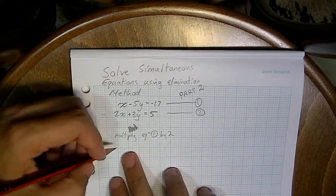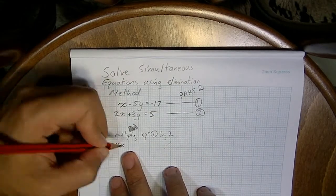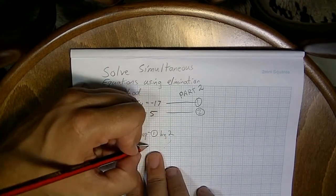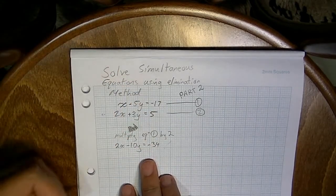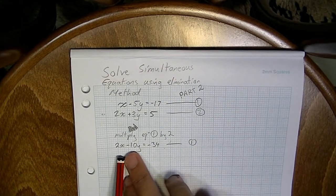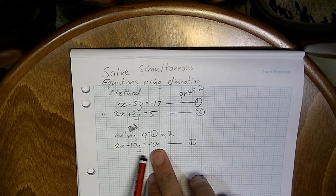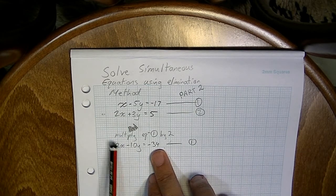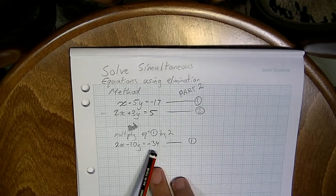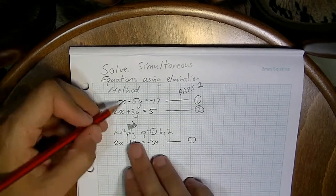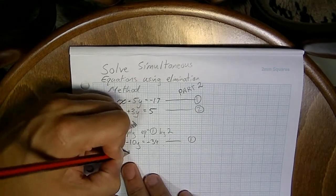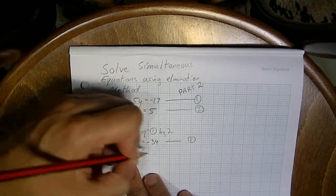When I multiply equation 1 by 2, I get 2x minus 10y equals negative 34. That's still equation 1. Remember, I've multiplied everything by 2, so it hasn't changed anything — I multiplied the left-hand side by 2 and the right-hand side by 2, so there's no big problem. We haven't broken any rules. Leave equation number 2 exactly as it was: 2x plus 3y equals 5.